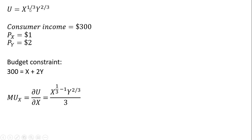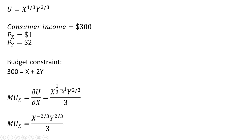We subtract 1 from the exponent on X, following the rules of differentiation — so 1/3 minus 1. We don't need to do anything with the Y variable. Simplifying, X to the 1/3 minus 1 is just X raised to the minus 2/3 power. That is the marginal utility of good X.